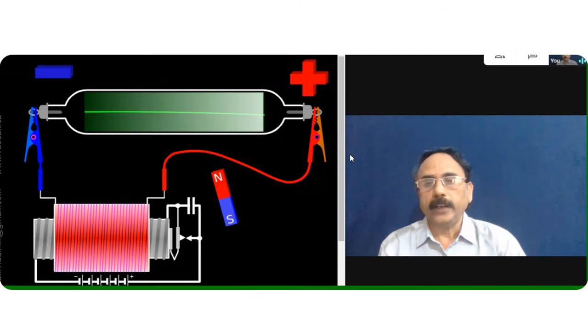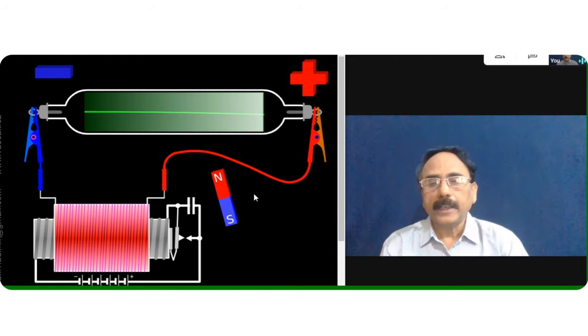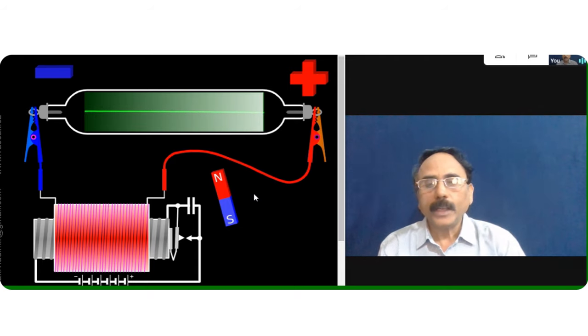Let's watch this animation from the physics animation site. It is depicting the Lorentz force. This green path is showing the path of cathode rays.